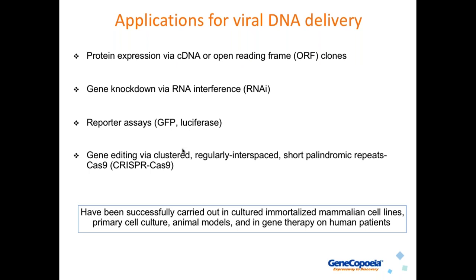What are some of the applications for DNA delivery? One is protein overexpression via cDNA or open reading frame clones — GeneCopia's ORF clones are available in viral vectors. Another is gene knockdown via RNA interference or RNAi. Another application is reporter assays such as using GFP or luciferase. And finally, one of the hottest technologies right now — viral delivery for gene editing via the clustered regularly interspaced short palindromic repeats, or CRISPR-Cas9 system. Viral delivery has been successfully carried out in cultured immortalized mammalian cell lines, primary cell culture, animal models, and in gene therapy on human patients.